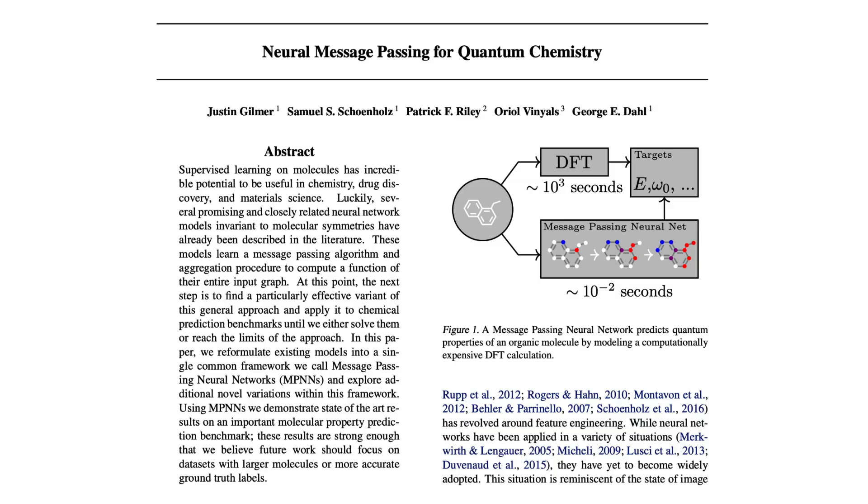The next paper is quite an interesting one, and it proposes a message-passing neural network that tries to predict the quantum properties of an organic molecule by modeling a DFT calculation, which is a very computationally expensive calculation in quantum physics. Unfortunately, that's all I have to say about this paper, since I am not familiar with this topic. But if you find it interesting, definitely give it a go.